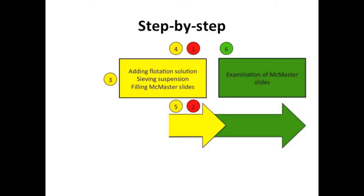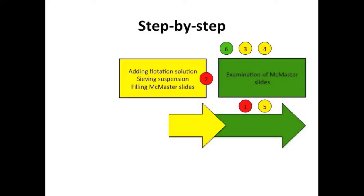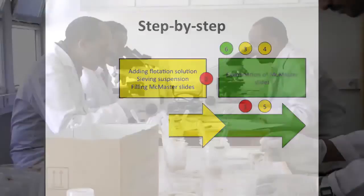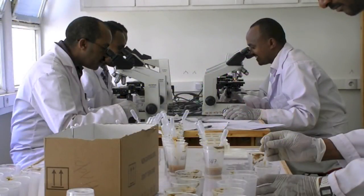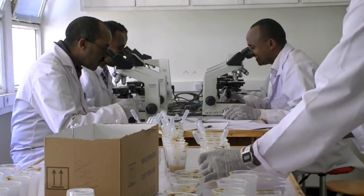When a sufficient number of McMaster slides are filled, a sixth person can start examining the slides, indicated in green. Gradually, more people can shift towards the third table and examine McMaster slides. This process starts with person 3 who added the flotation solution, over persons 4 and 5 who sieved the suspension, to persons 1 and 2 who filled the chambers. However, the number of slides available will not exceed the number of samples that need to be examined, and hence one person will need to continue washing and filling the McMaster slides.